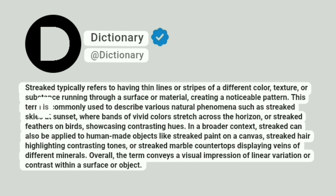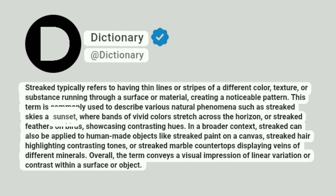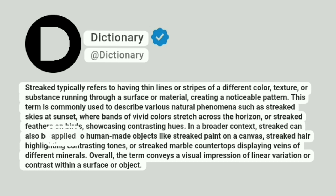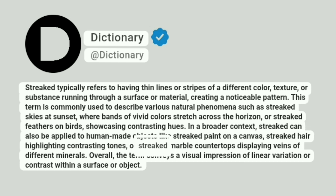This term is commonly used to describe various natural phenomena such as streaked skies at sunset, where bands of vivid colors stretch across the horizon, or streaked feathers on birds, showcasing contrasting hues. In a broader context, streaked can also be applied to human-made objects like streaked paint on a canvas, streaked hair highlighting contrasting tones, or streaked marble countertops displaying veins of different minerals.